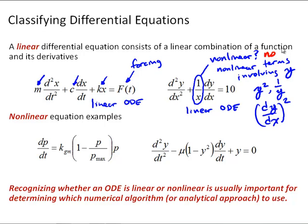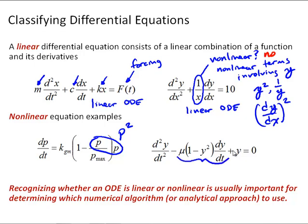Here are some examples of nonlinear differential equations. The constrained population growth model has a p times p term, so that p squared makes it nonlinear. The van der Pol equation has two nonlinear terms: when you expand the middle term, we get a y squared term, which is nonlinear, and y squared times dy/dt is also nonlinear. Recognizing whether an ODE is linear or nonlinear is generally important for determining which numerical algorithm or analytical approach to use.